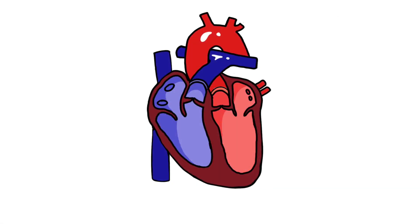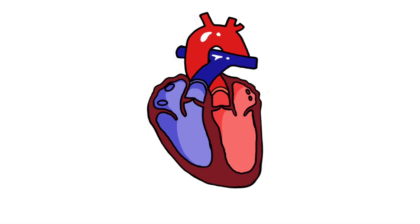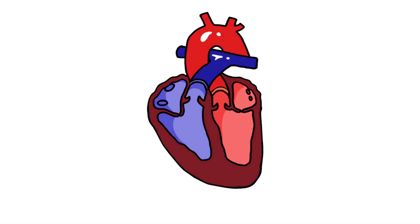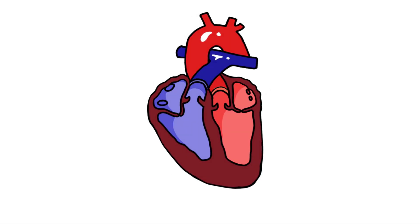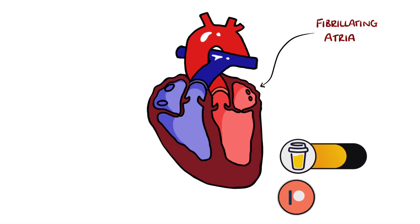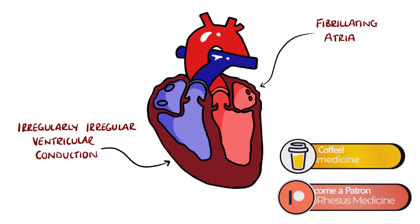In atrial fibrillation there is abnormal electrical activity that leads to the atrial muscle fibers contracting at different times, giving a quivering or fibrillating activity. Only some of these electrical signals get conducted down into the ventricles, making them contract. There's no real pattern of which impulses will get conducted, therefore we end up with a textbook irregularly irregular heart rhythm.